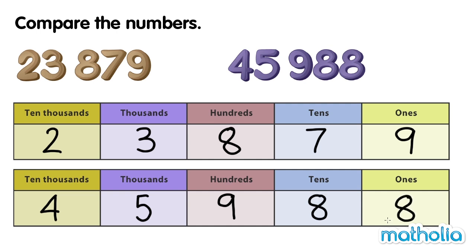When comparing numbers, we start by comparing the digits in the highest place value. So, let's compare the digits in the 10,000s place. 2 is smaller than 4.